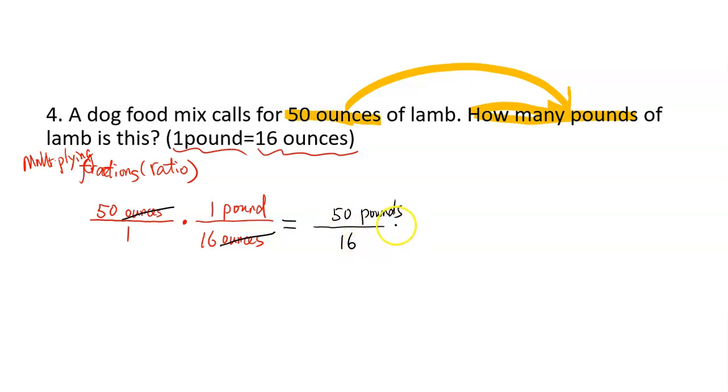And 50 divided by 16, you can do long division, or you can just reduce it by 2. So you have 25 over 8 pounds. If you don't like fractions, you can turn this into either mixed number. If this is an improper fraction, so you can turn that into 3 and 1/8 pounds. Or you can use the decimal equals 3.125 pounds. So either way.